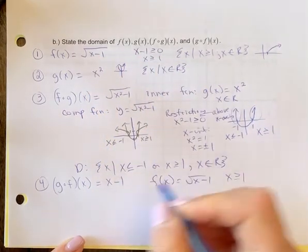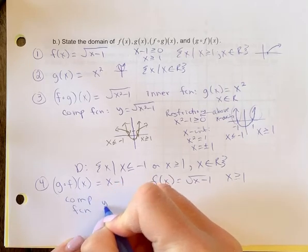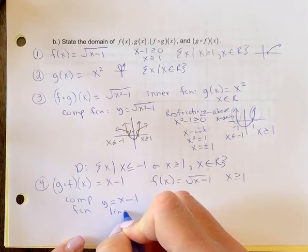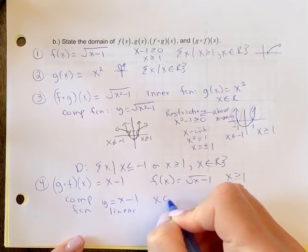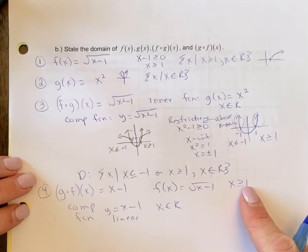And then our composite function is y equals x minus 1. That's linear, which means there's x element of reals. So there's no restrictions. But we have to include the restriction on that inner function as well.